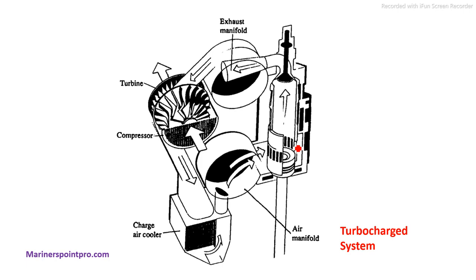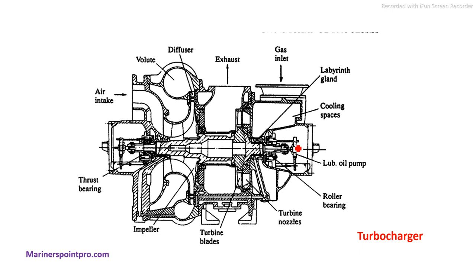Moving on, this is a detailed diagram of the turbocharger. It seems a bit complex but you don't have to draw these things — you just have to remember the parts. The parts are easy to remember: the labyrinth land, gas inlet, exhaust, diffuser, volute casing, thrust bearing, impeller, and turbine nozzles. In Synergy, it might ask what a particular part is in a given area, so just go through this.